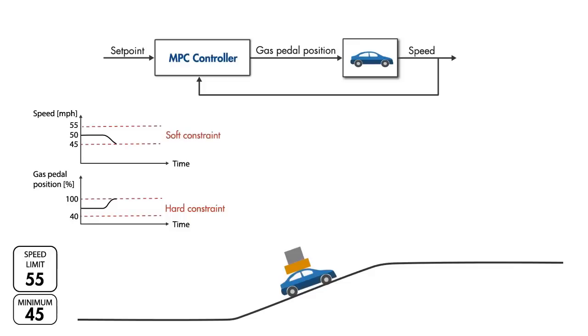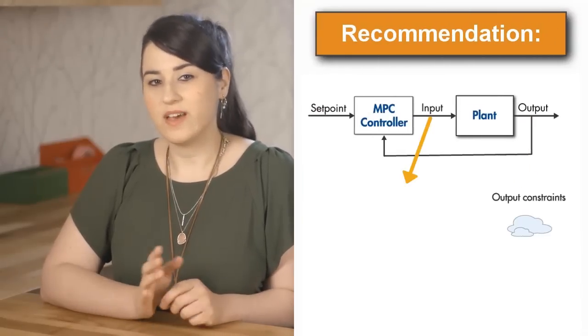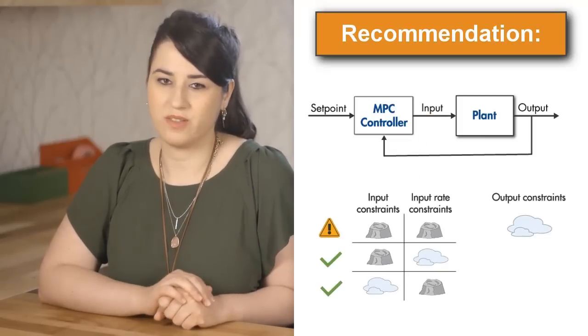However, if the speed constraint is soft, the controller will allow violating it until the car overcomes the hill and the conflict won't occur. Note that to keep the violation of the soft constraint small, it is being minimized by the optimization problem. The recommendation is to set output constraints as soft and avoid having hard constraints both on the inputs and the rate of change of the inputs.